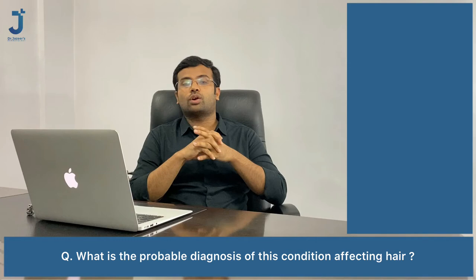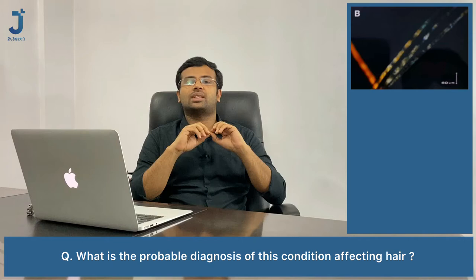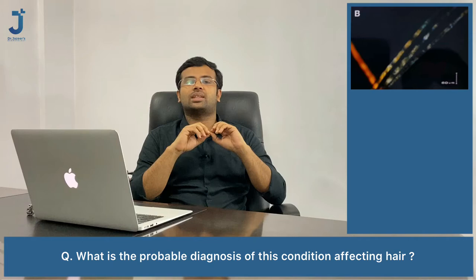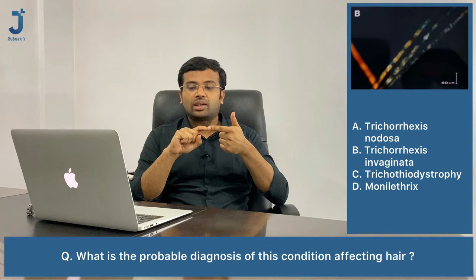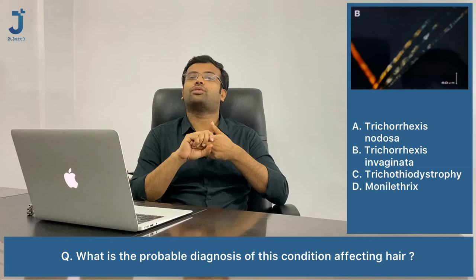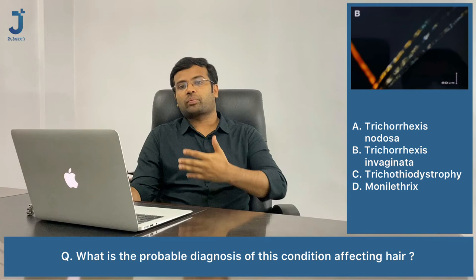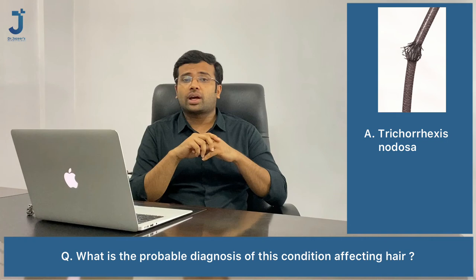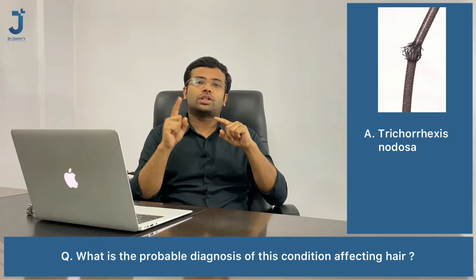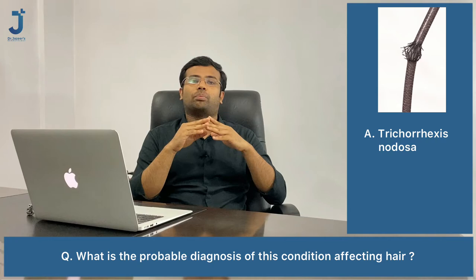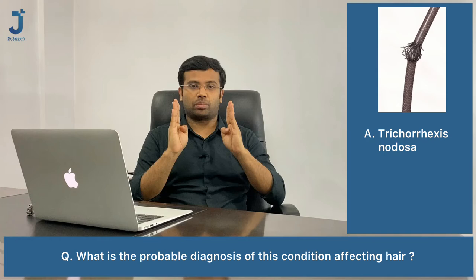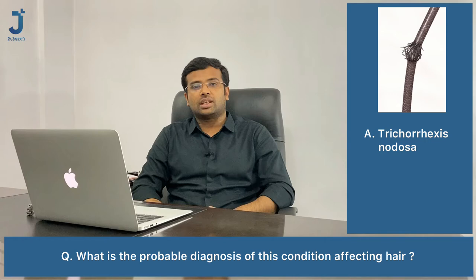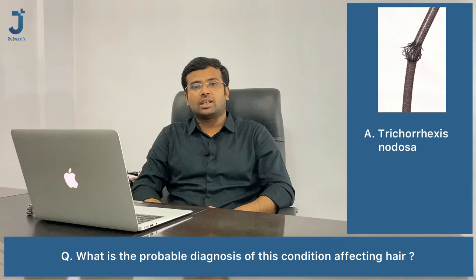Next question: what is the probable diagnosis of this hair condition seen on polarizing microscopy? Options are trichorrhexis nodosa, trichorrhexis invaginata, trichothiodystrophy, and monilethrix. In trichorrhexis nodosa, polarizing microscopy shows a longitudinal break in the hair shaft, giving a paintbrush appearance — like two paintbrushes pulled against each other.